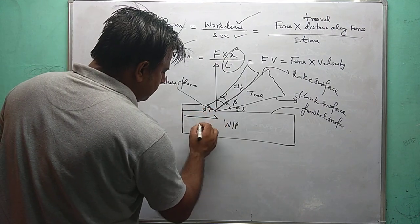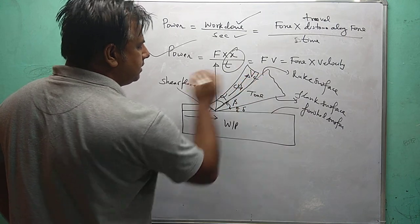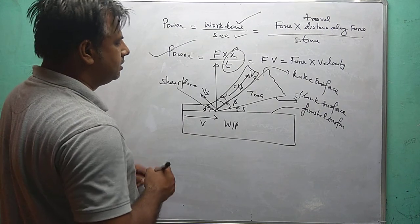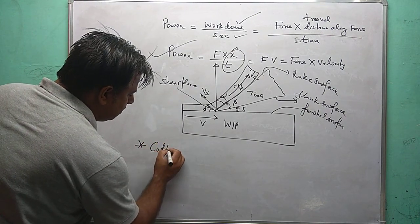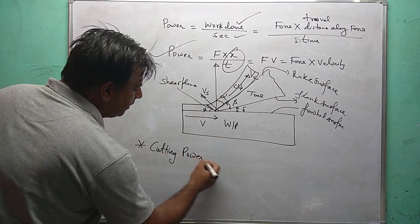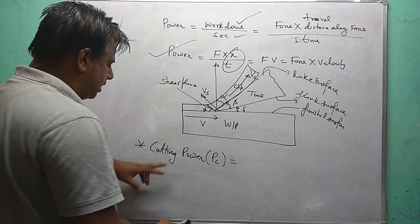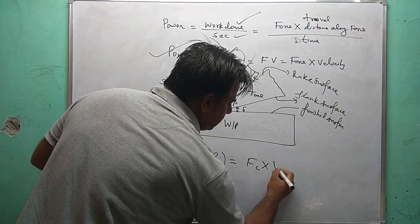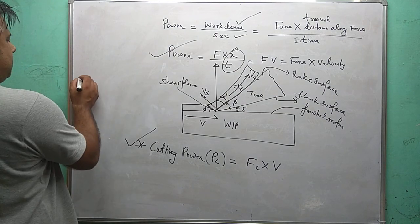This is the cutting velocity and chip flow velocity V suffix C, and the shear velocity is Vs. So the cutting power P suffix C is the cutting force Fc multiplied by cutting velocity V.